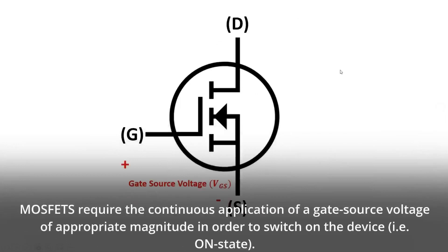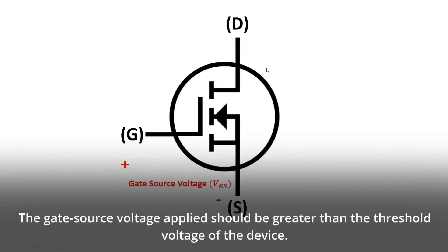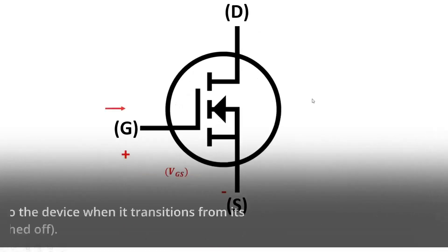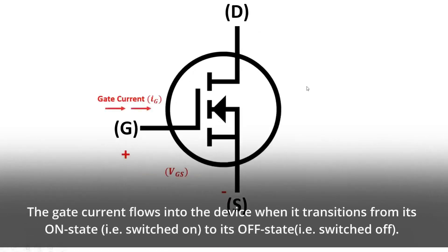MOSFETs require the continuous application of a gate source voltage of appropriate magnitude in order to switch on the device, i.e., on-state. The gate source voltage applied should be greater than the threshold voltage of the device. The gate current flows into the device when it transitions from its on-state, i.e., switched on, to its OFF state, i.e., switched off.